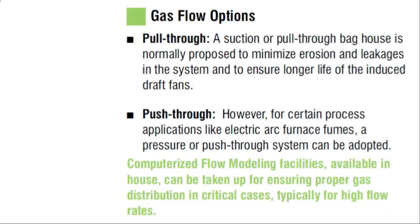Gas Flow Options — Pull-through: A suction or pull-through bag house is normally proposed to minimize erosion and leakages in the system and to ensure longer life of the induced draft fans. Push-through: However, for certain process applications like electric arc furnace fumes, a pressure or push-through system can be adopted. Computerized flow modeling facilities available in-house can be used to ensure proper gas distribution in critical cases, typically for high flow rates.